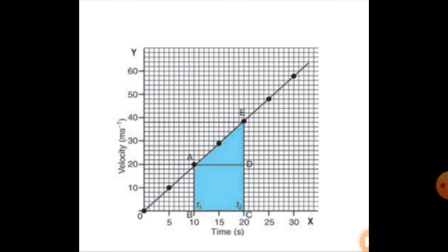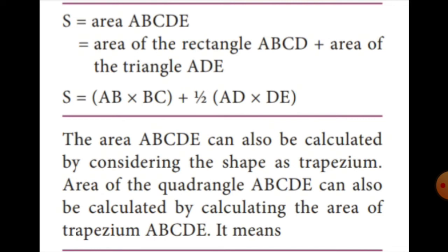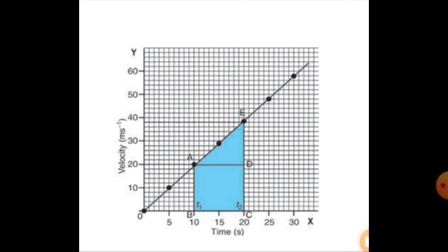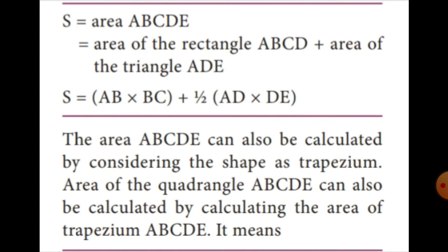S is equal to the area of ABCDE. We can divide this into the area of the rectangle plus the area of the triangle. S equals area of rectangle ABCD plus area of triangle ADE. That is: S equals AB into BC plus half times AD into DE.